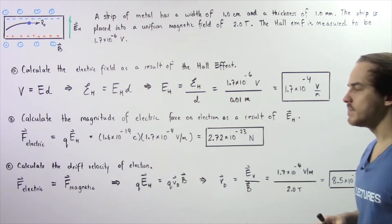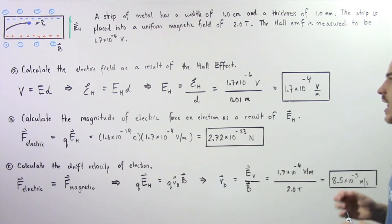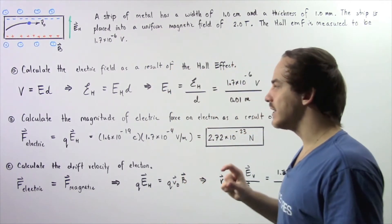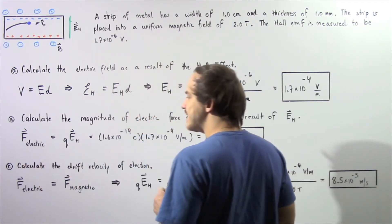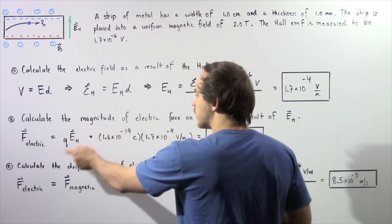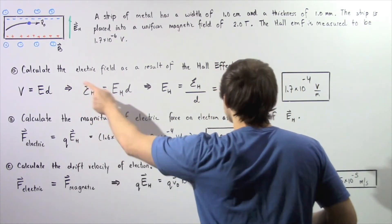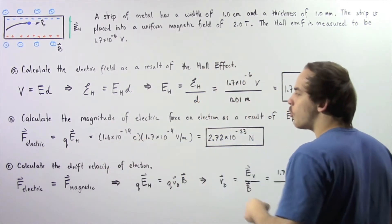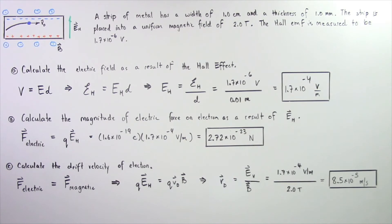Now let's move on to part B and calculate the magnitude of electric force on a single electron as a result of that electric field. The electric force is equal to the charge on the electron Q multiplied by the Hall electric field EH. Using the result from part A and the charge of one electron, 1.6 times 10 to negative 19 coulombs, that gives us a force of about 2.72 times 10 to negative 23 newtons.